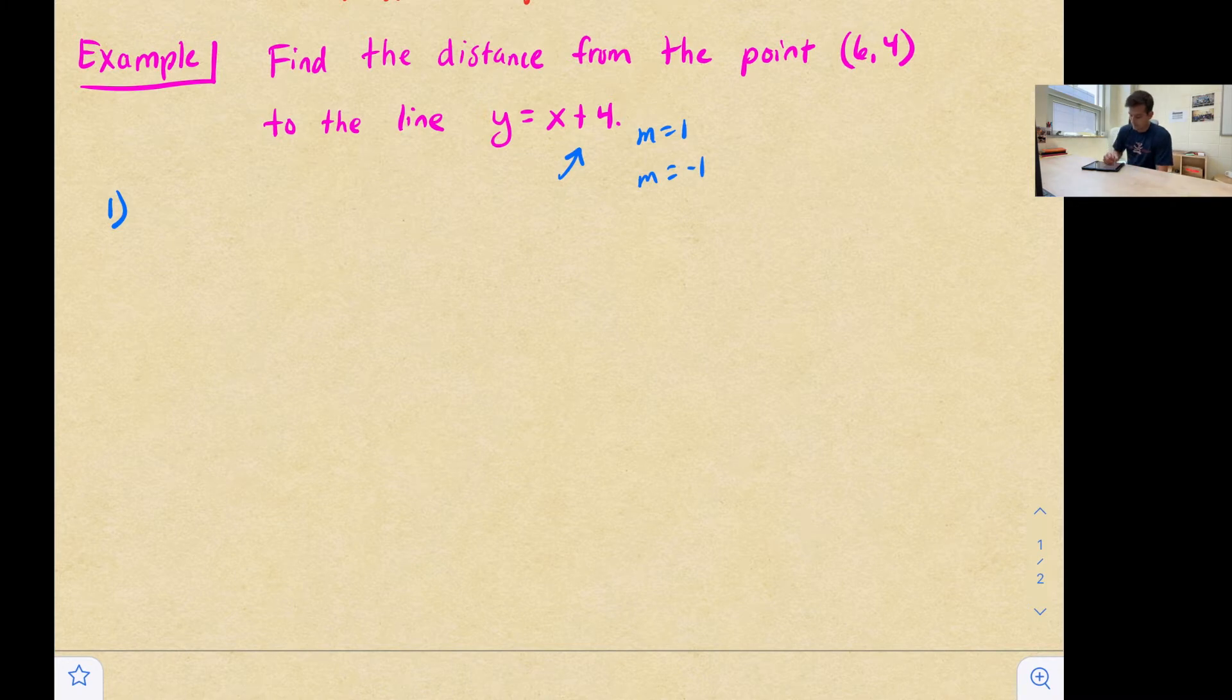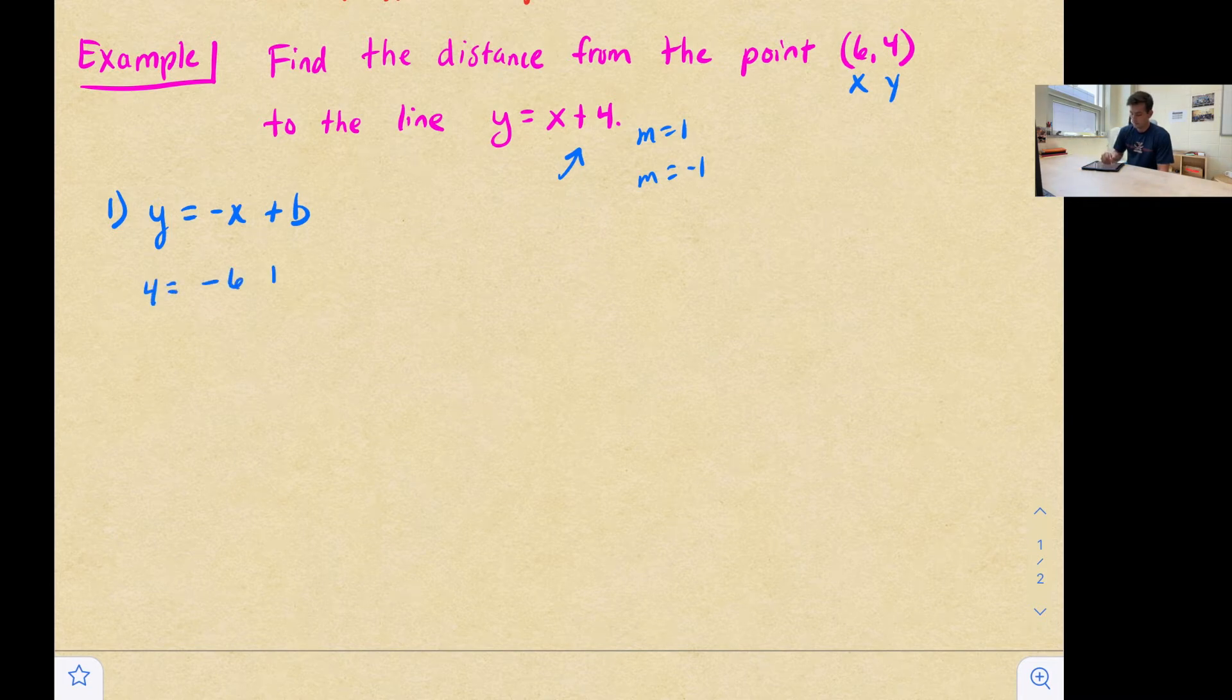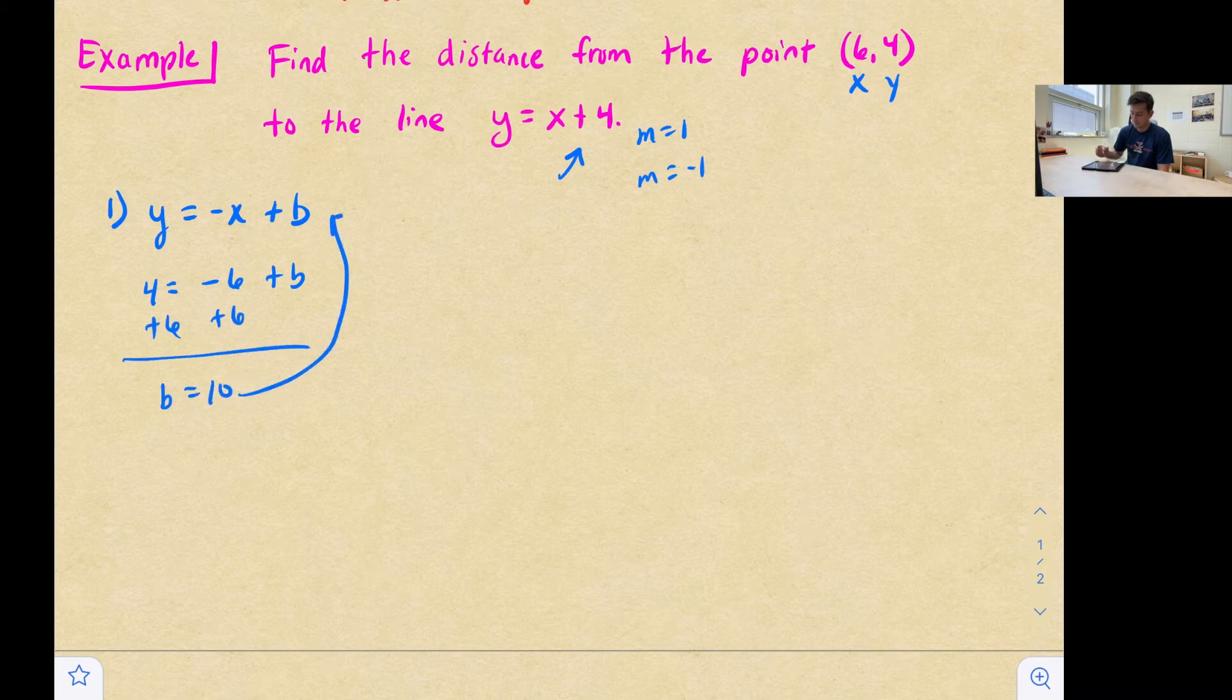Okay, so now we have y equals negative x plus b. And we have our coordinate up here that we can use to plug in for x and y so that we can solve for our y-intercept. So y is four and x is six. We add six to both sides, and we get b is 10. So now we can put that right there. And now our equation that is perpendicular to the line y equals x plus four is y equals negative x plus 10.